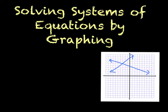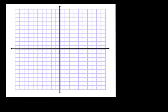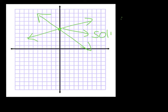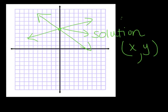This video is going to go over solving systems of equations by graphing. Systems of equations are when you have two equations and you graph them. You graph their lines and see where they cross. That point of intersection is called the solution to the system of equations. You always write it as coordinates, x comma y. That solution should work in both equations — it has to work in both equations to be a solution.